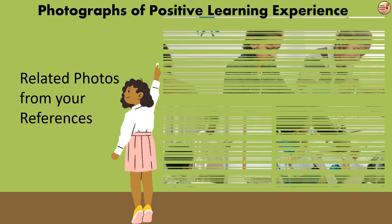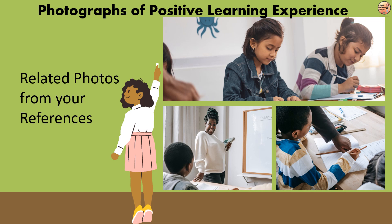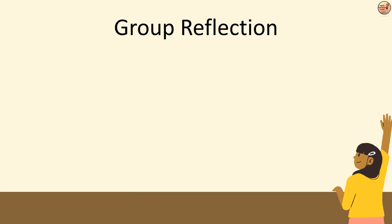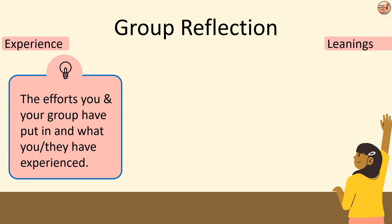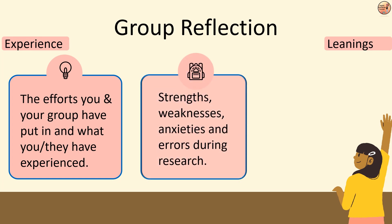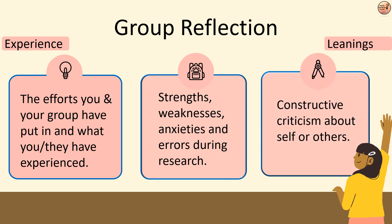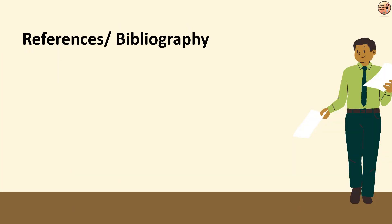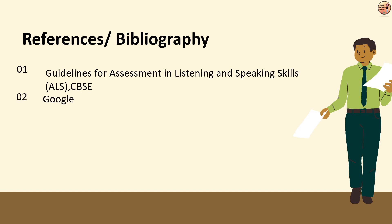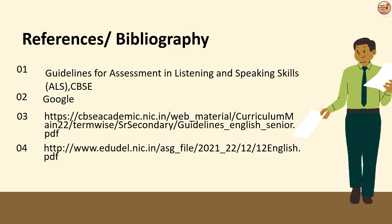Apart from written work, you must attach a collage or photo journey of your research work. You can give a catchy heading to this page — be creative. The next page will be group reflection, in which you talk about your experience: what happened, how the research helped you, what you have learnt, the efforts you and your group put in, your strengths, weaknesses, anxieties and errors during research, and constructive criticism about yourself and others. You can use personal pronouns like 'I' and 'we.' The last page will be the bibliography, listing the reference books, magazines and internet resources you used in designing, carrying out and understanding your project.